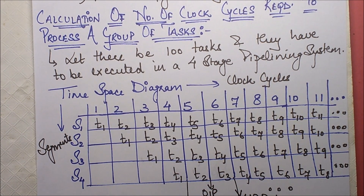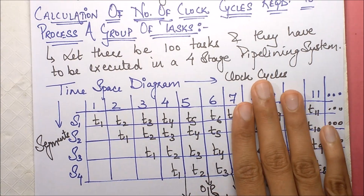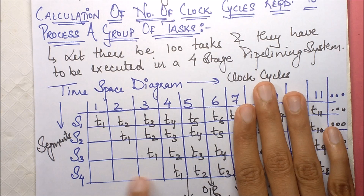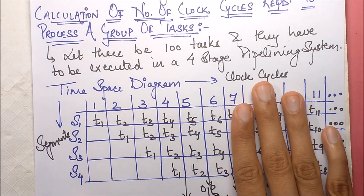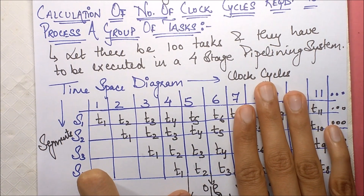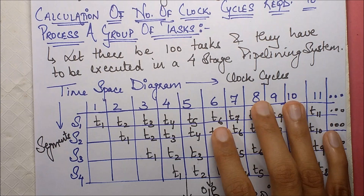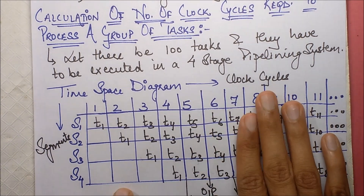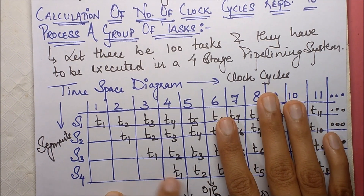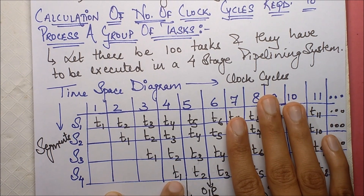Let's find the pattern by considering a smaller example. If we had only three tasks, the total clock pulses required would be six. For the first task, you need to execute all stages; after that, you get each subsequent output after one stage interval. For two tasks it was five (four plus one), for three tasks it was six (four plus two).